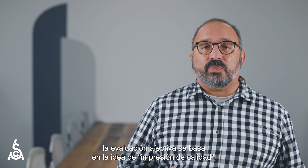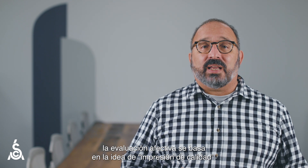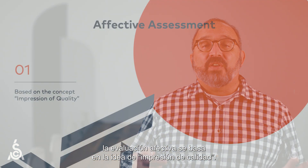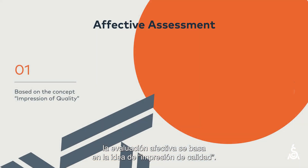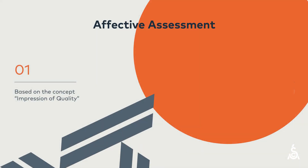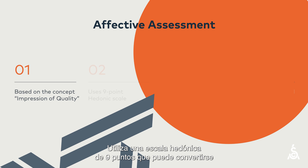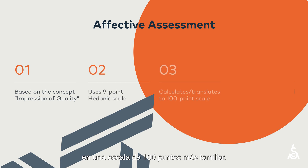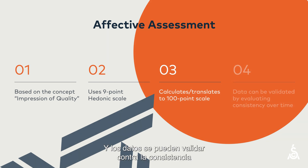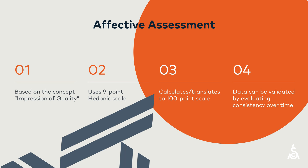To summarize, the effective assessment is based on the idea of impression of quality. It uses the 9-point hedonic scale that can be translated into a more familiar 100-point score. And data can be validated by consistency in effective preferences over time.